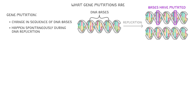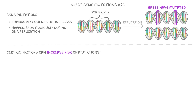You can tell they've mutated because those bases are different from the ones on the other copy below. While mutations can happen naturally, certain factors do increase the risk of mutations, and these risk-increasing factors are known as mutagens.